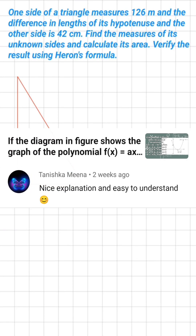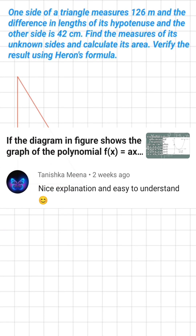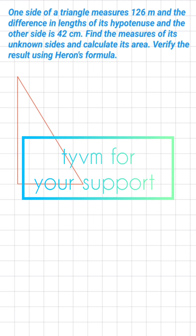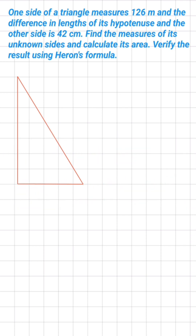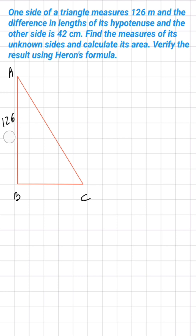One side of a triangle measures 126 meters and the difference in lengths of its hypotenuse and the other side is 42 centimeters. We have to find the measures of its unknown sides and find its area. We also have to verify it using Heron's formula. So let the name of the triangle be ABC. One side is given and it is 126 meters. About the hypotenuse and the other side, the difference between them is 42 centimeters.